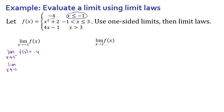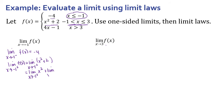Now if I look at what's happening as we approach negative 1 with numbers that are larger than it, we're going to use the second piece of the function, because right after we leave negative 1 we're in that second piece. So that's the limit as x approaches negative 1 from the right of x² + 2. I can separate that using limit laws and the power rule — this becomes the limit as x approaches negative 1 from the right of x, all squared, plus the limit as x approaches negative 1 from the right of 2.